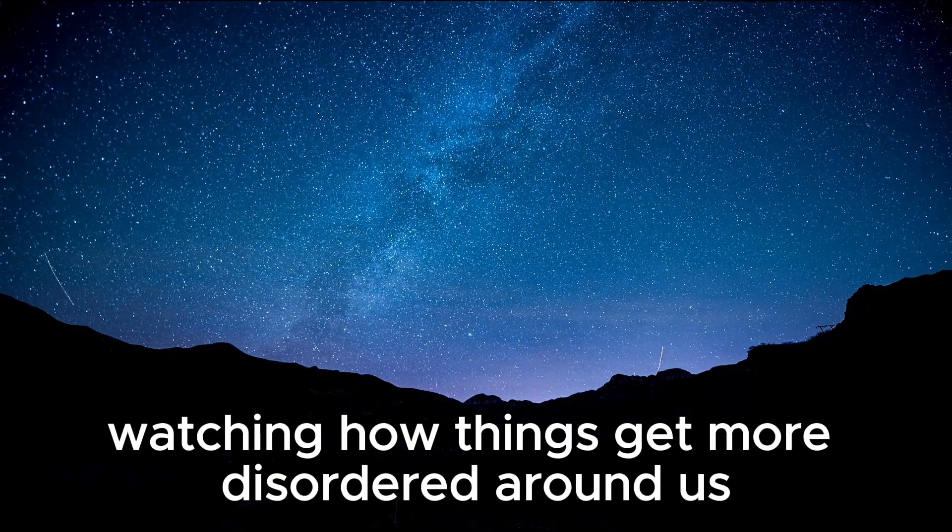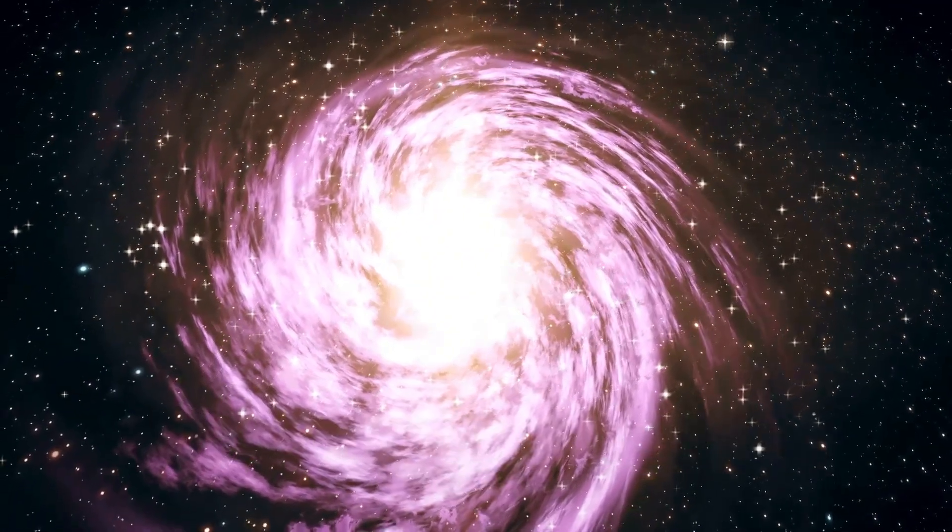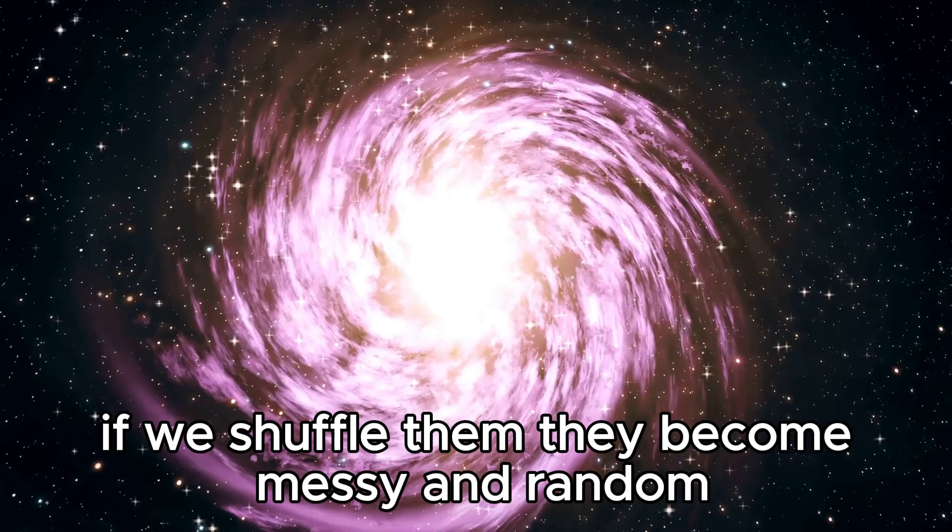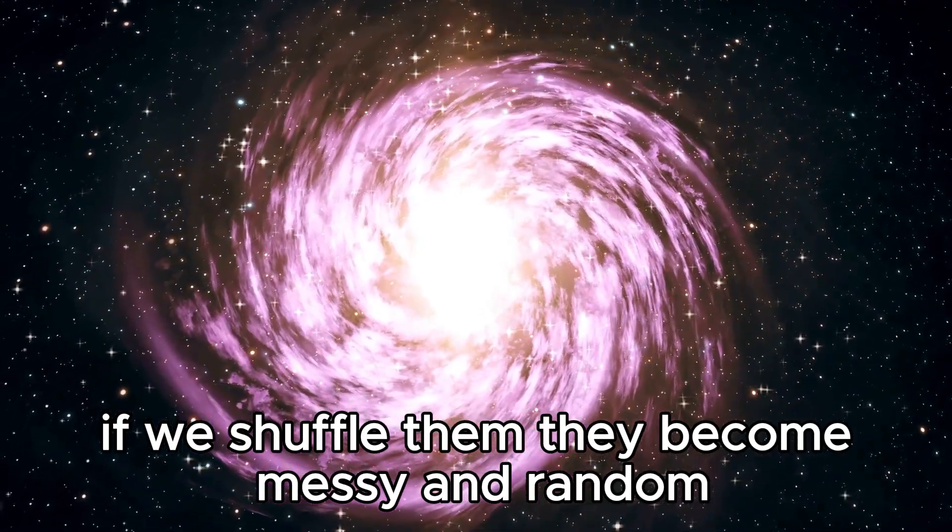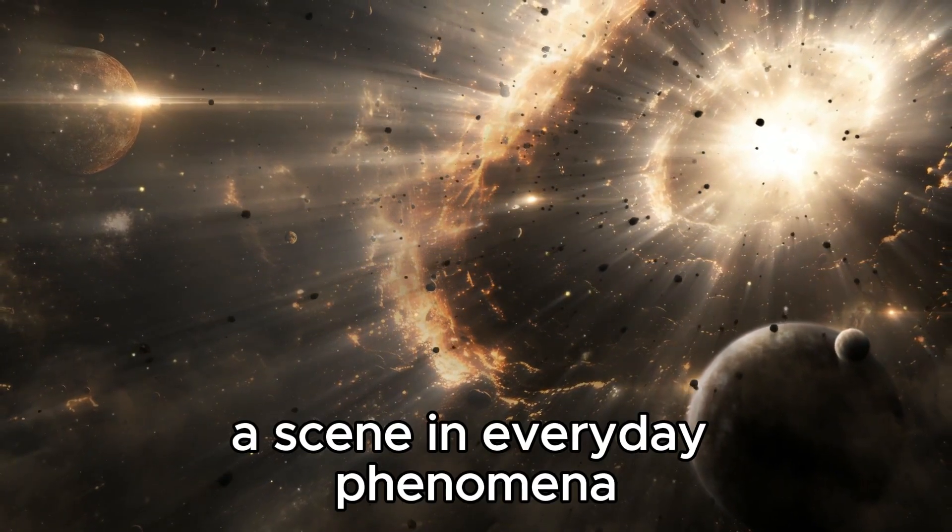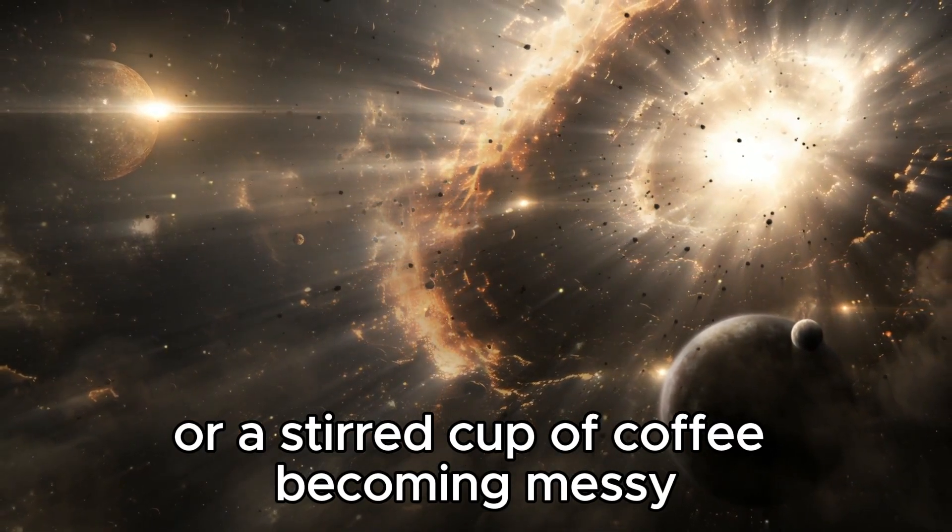Watching how things get more disordered around us helps us see the one-way flow of time. Imagine a deck of cards all neatly arranged. If we shuffle them, they become messy and random. This change from order to disorder shows how time moves in one direction, as seen in everyday phenomena like ice melting or a stirred cup of coffee becoming messy.